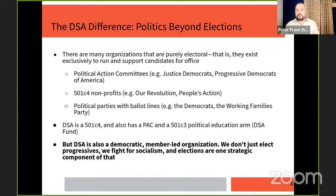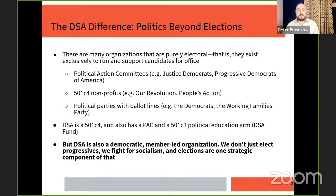To start, I want to give a broader context of what we're doing when we talk about running elections in the Democratic Socialists of America and how we approach electoral politics. It may be different from what people have experienced in other organizations. A lot of organizations you encounter in electoral politics are purely electoral — they exist to run and support candidates. Some are PACs like Justice Democrats, some are 501c4 non-profits like Our Revolution.